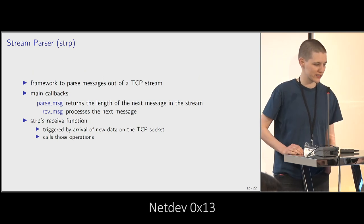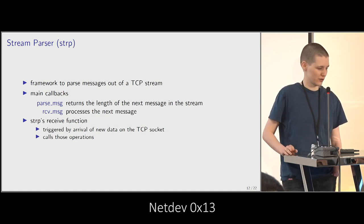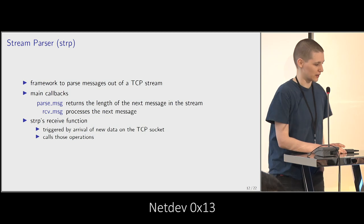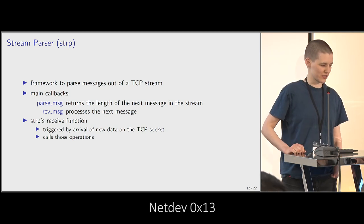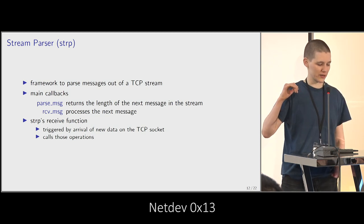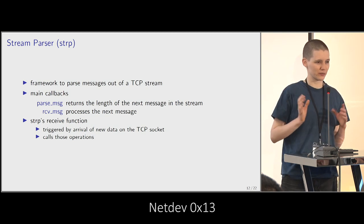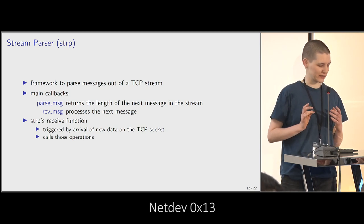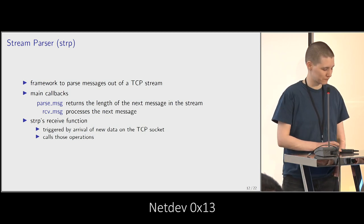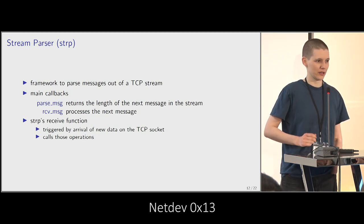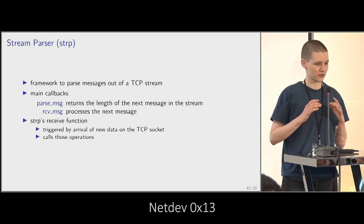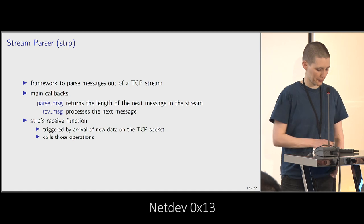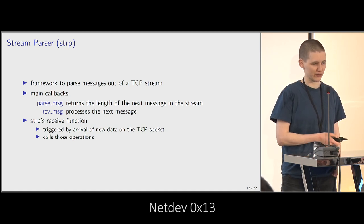The next piece of infrastructure the kernel provides is the stream parser — a framework used to parse messages out of a TCP stream, also used by KTLS. A module using the stream parser has two callbacks: the parse message callback, which reads some data out of the TCP stream and returns the length of the next message; and the receive message callback, which processes the message. The stream parser infrastructure has a receive function triggered when new data arrives on the TCP socket, calling those parse message and receive message operations.